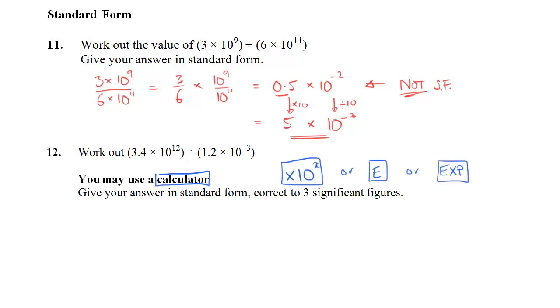Whatever it is, find out for your calculator what the button is and make sure that you can use it. And in this case, we would just type in 3.4 and then press that button. And then press 12. You don't have to type a times or the 10. The button does that for you.